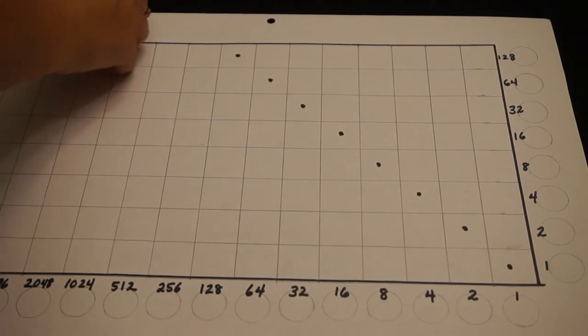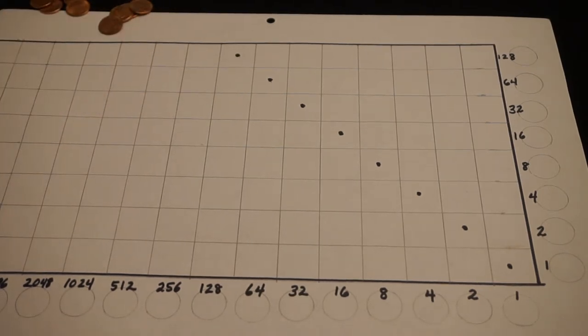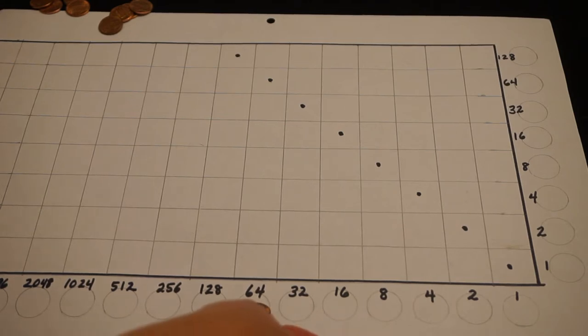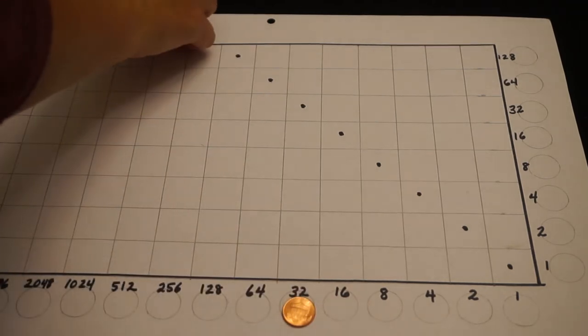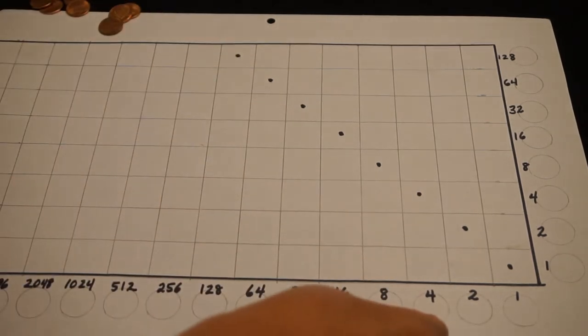So the biggest challenge really in working with this is that you have to represent your numbers using the powers of 2. We could think of that as binary, that's not how Napier would have thought of it. 64 is bigger than 60, so I start with 32.